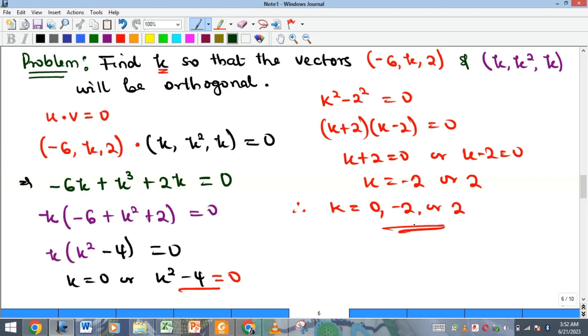And you can actually check if it is going to be true. Let me check for zero. If I put my k as zero, the first vector will be (-6, 0, 2) and the second vector will be (0, 0, 0).